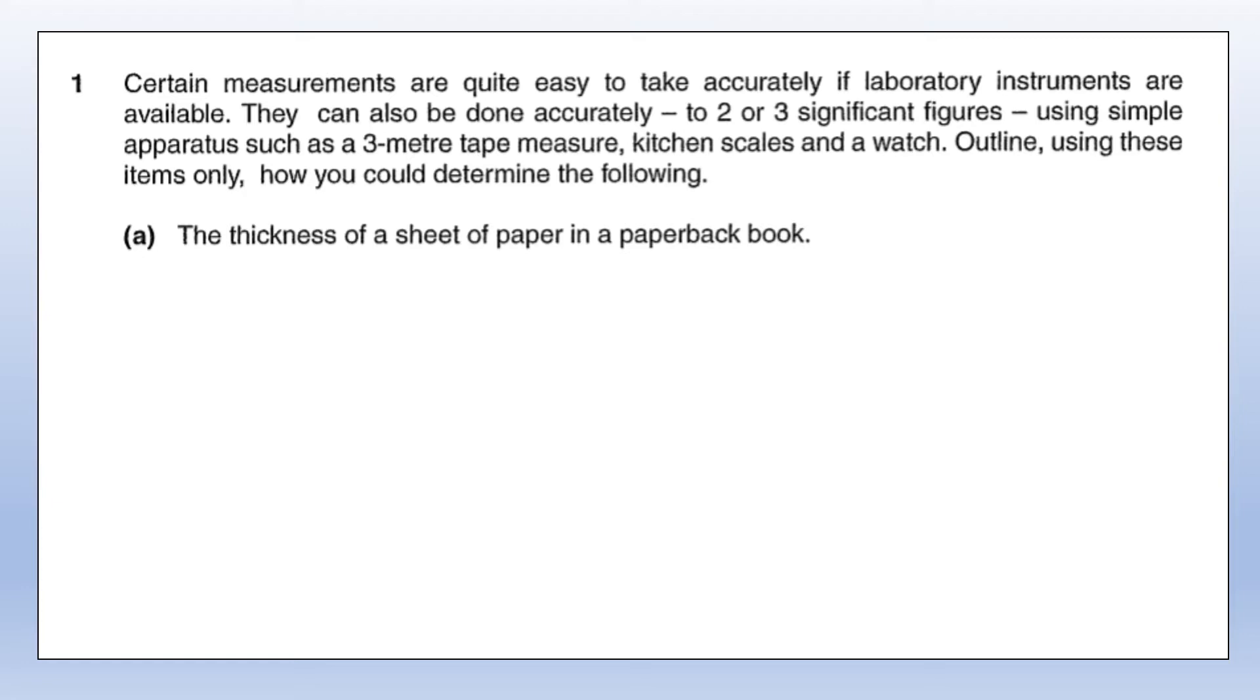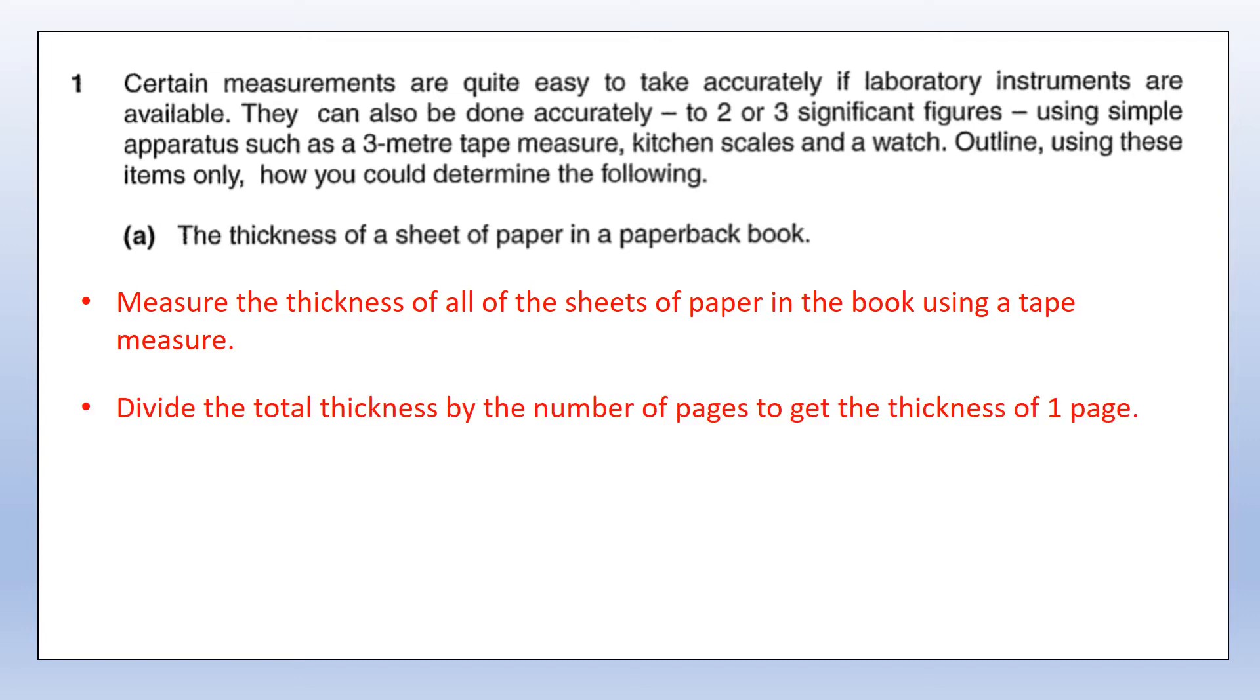The first thing we want to find out is the thickness of a sheet of paper in a paperback book. What we do is measure the thickness of all of the sheets of paper in the book using the tape measure, because we're measuring a distance. Then we divide the total thickness by the number of pages to get the thickness of one page. That would be the most accurate way, as if we tried to measure just one on its own, the precision of our tape measure is not going to be good enough.